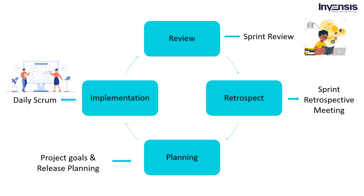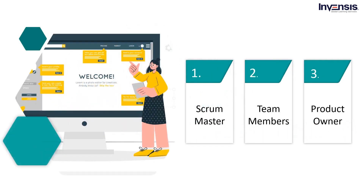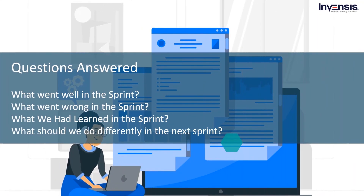If the sprint duration is one week, the sprint retrospective duration is about 45 minutes. If the sprint duration is two weeks, and if the sprint is about one month, the retrospective meeting will be held for 180 minutes — that is almost three hours. Now let us discuss who runs a sprint retrospective. The sprint retrospective is usually the final meeting done in a sprint, done immediately after the sprint review. The entire team involved in the project — with the scrum master and product owner — are involved in the retrospective and required to actively participate. During the sprint retrospective, the team usually talks about: what went well in the sprint, what went wrong in the sprint, what we learned in the sprint, and what should we do differently in the next sprint.